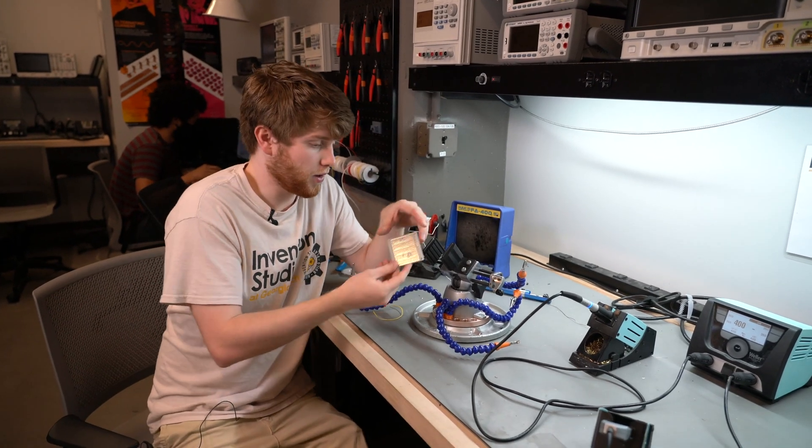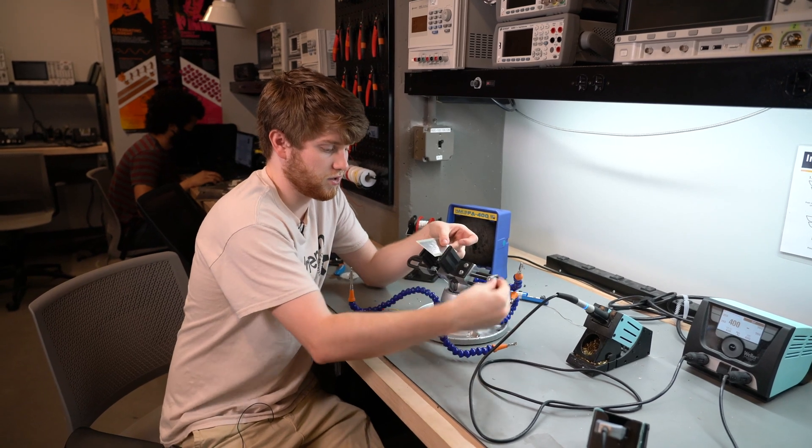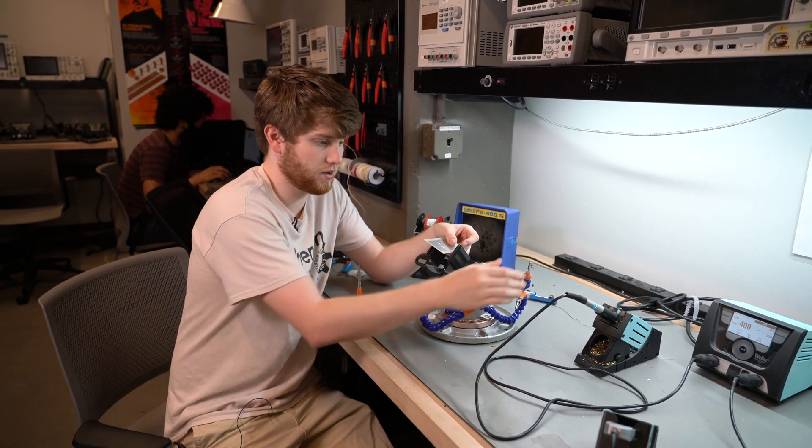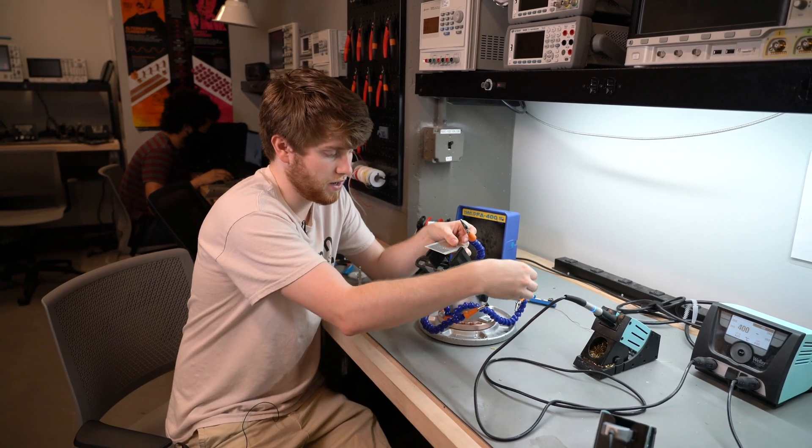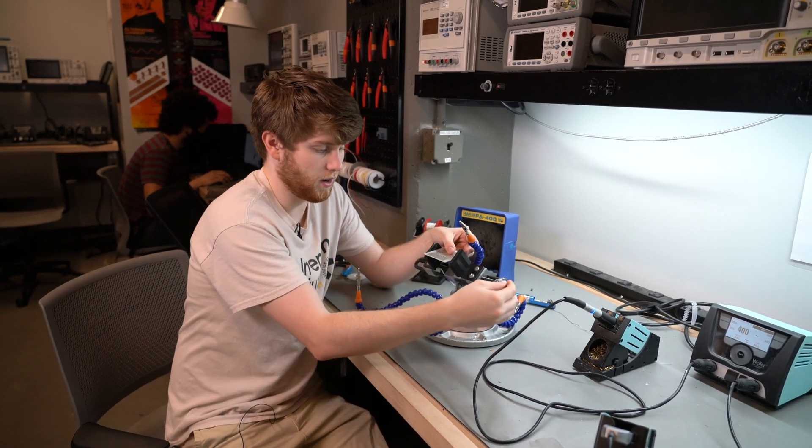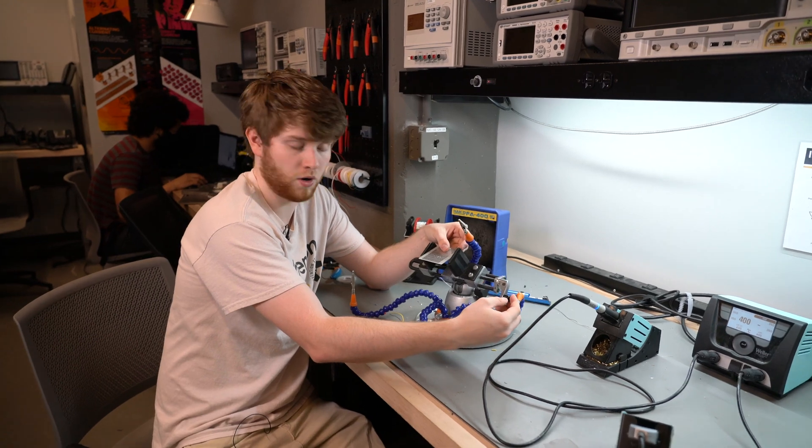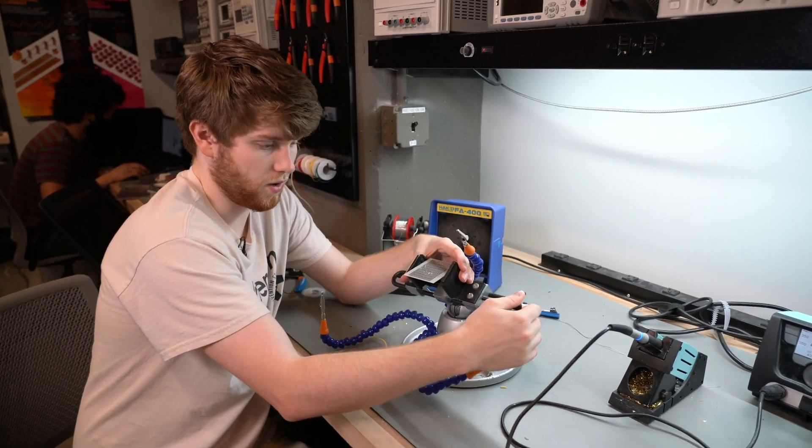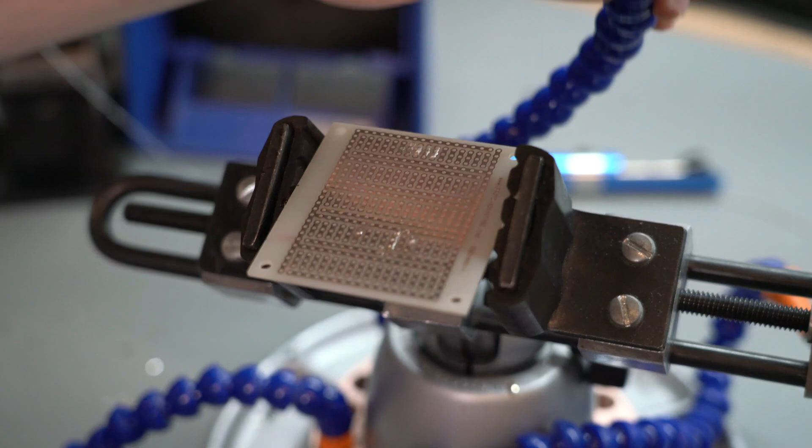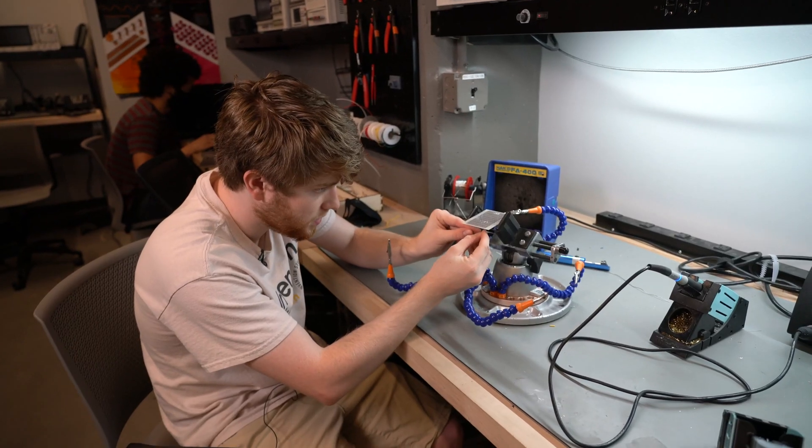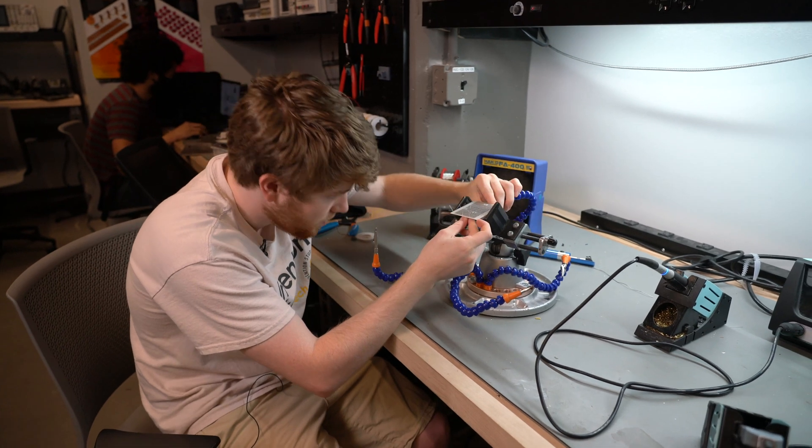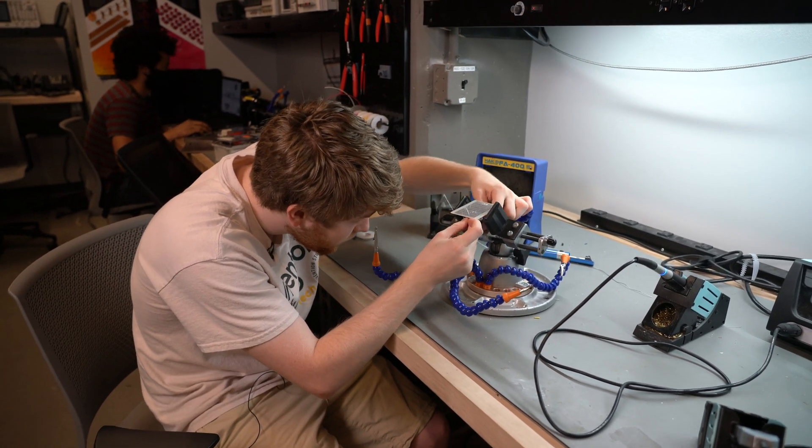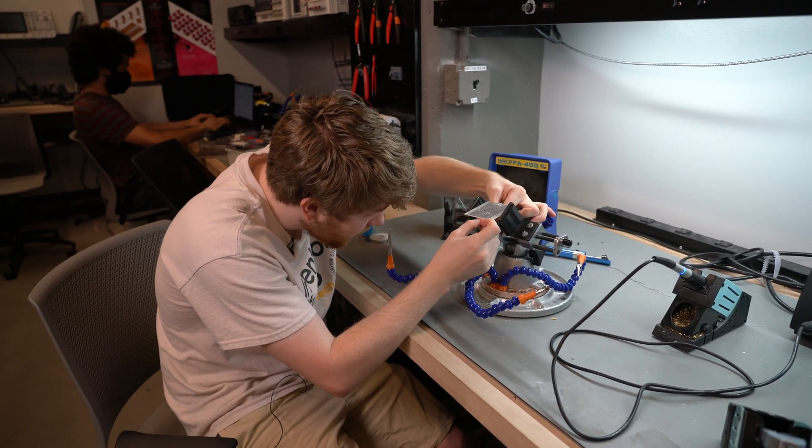When you begin soldering your protoboard, if you would like to use one of these vice grips and alligator clamps to hold your board steady and hold your components on the board, you can just clamp in the protoboard, or whatever you're trying to solder, right here and hold any component that you don't want to fall through with an alligator clip.